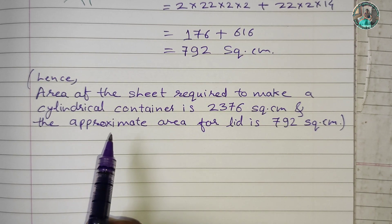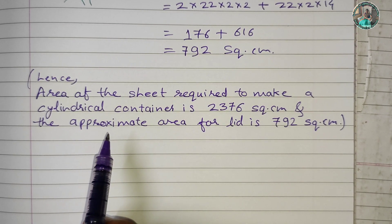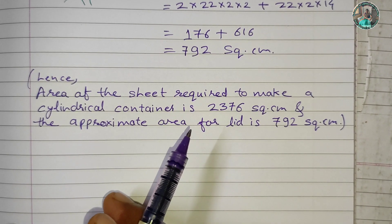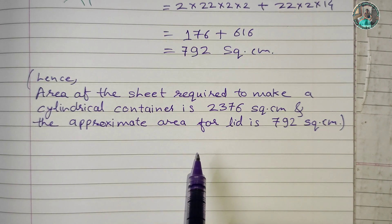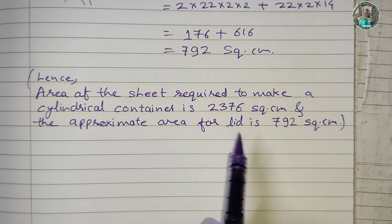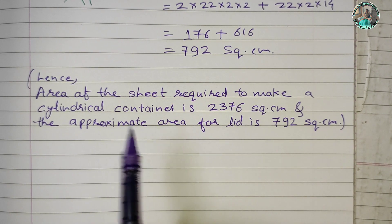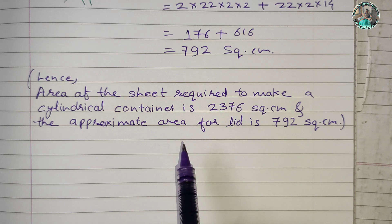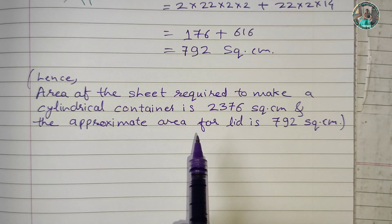Note that the lid is slightly larger than the cylinder opening — the diameter given for the lid is the same as the container so that it fits properly on top of the cylinder.